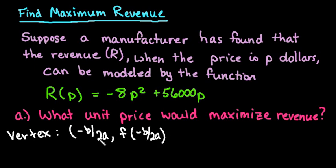Where the negative B over 2A would represent the unit price and the F of negative B over 2A would represent the maximum revenue.